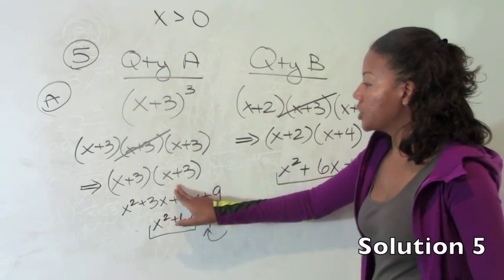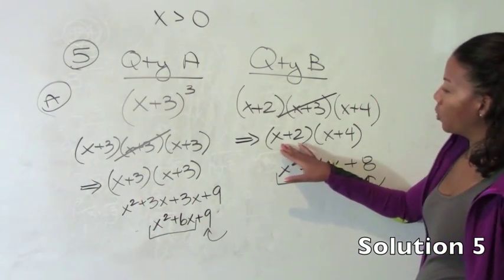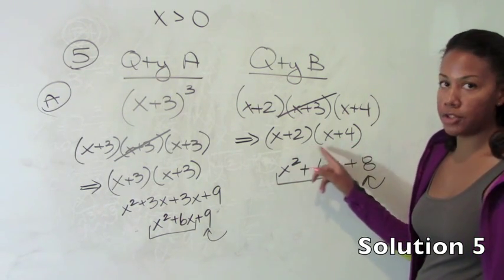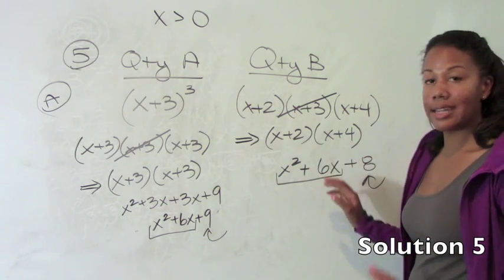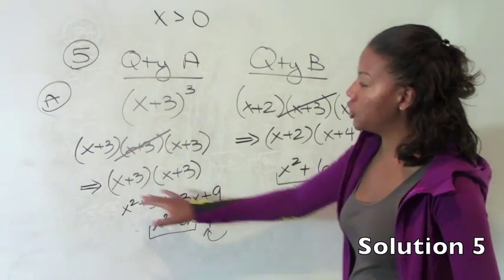So 1 plus 3 is 4. 1 plus 3 is 4. So this side would be 16 when you multiply it together. And over here 1 plus 2 is 3. And 1 plus 4 is 5. So 3 times 5 gives you 15. Now that's just one example. So you want to be really confident and then go ahead and choose other numbers.